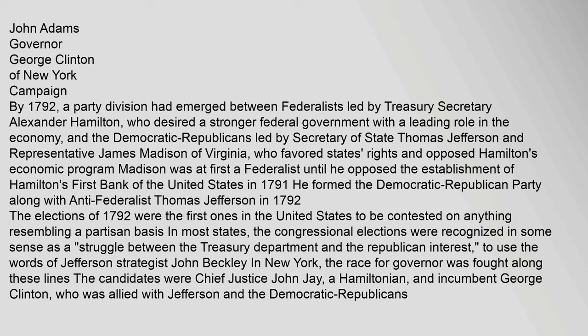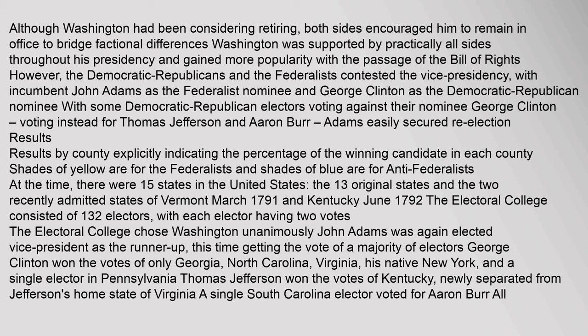In most states, the congressional elections were recognized as a struggle between the Treasury Department and the Republican interest. In New York, the race for Governor was fought along these lines — the candidates were Chief Justice John Jay, a Hamiltonian, and incumbent George Clinton, who was allied with Jefferson and the Democratic-Republicans. Although Washington had been considering retiring, both sides encouraged him to remain in office to bridge factional differences. Washington gained more popularity with the passage of the Bill of Rights. The Democratic-Republicans and the Federalists contested the Vice Presidency, with incumbent John Adams as the Federalist nominee and George Clinton as the Democratic-Republican nominee, with some Democratic-Republican electors voting instead for Thomas Jefferson and Aaron Burr. Adams easily secured re-election.